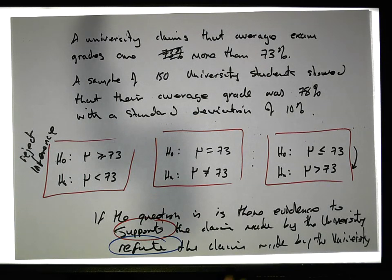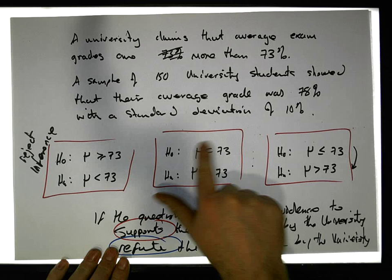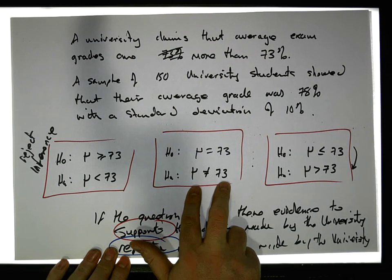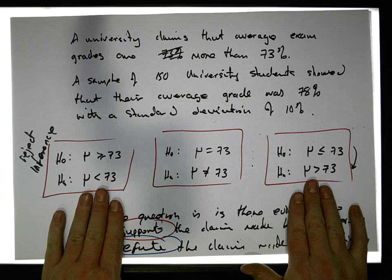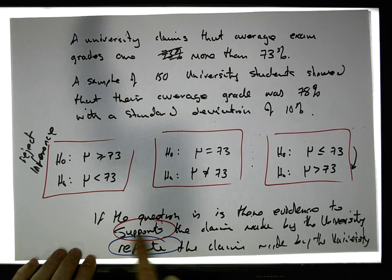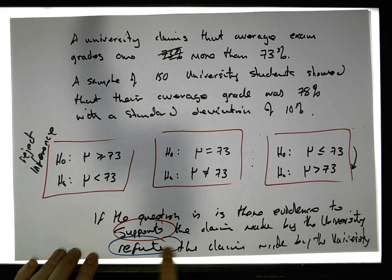And then finally, we could ask the question, is there evidence to suggest that the average of the population is different to 73%, the alternative here. But I think these two scenarios here and here are the more interesting, and they allow us to bring in this concept of supporting and refuting evidence.